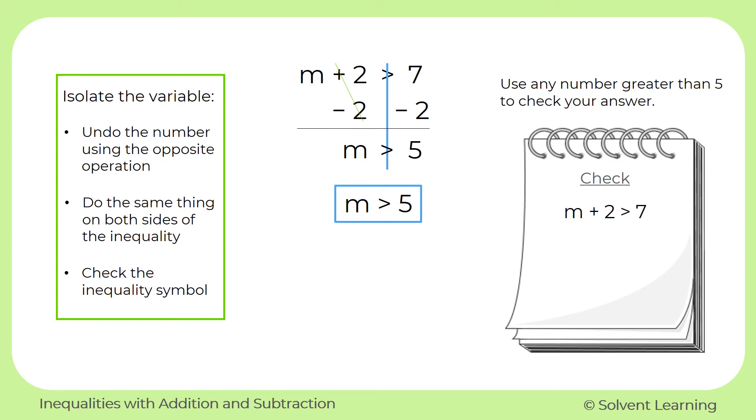I'm going to use the number 6, but you can pick your own number if you want. So now mine becomes 6 plus 2 is greater than 7. On the left, the 6 plus 2 is just 8. So this becomes 8 is greater than 7. And that's true. 8 is greater than 7. So since that's correct, I know that I do have the correct inequality symbol in my answer.